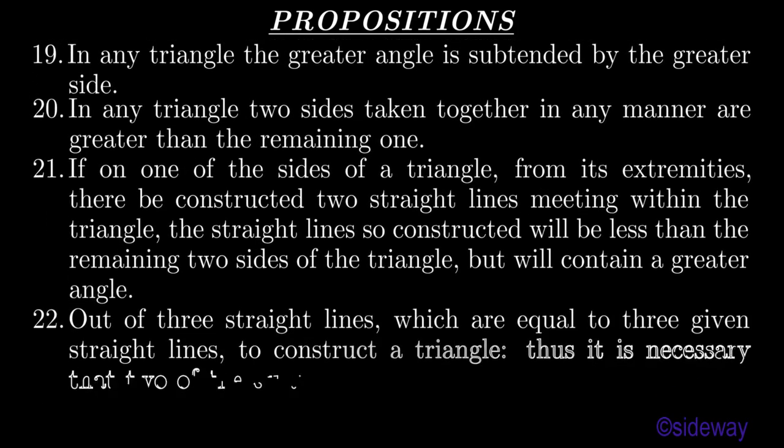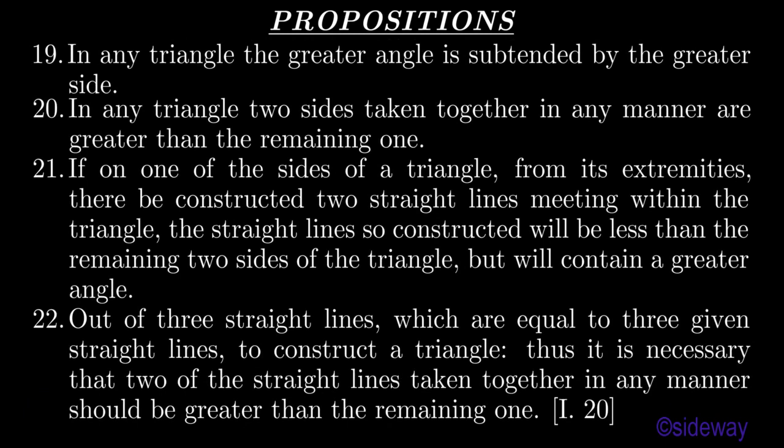Proposition 22. Out of three straight lines which are equal to three given straight lines, to construct a triangle. Thus it is necessary that two of the straight lines taken together in any manner should be greater than the remaining one, according to Book 1 Proposition 20.